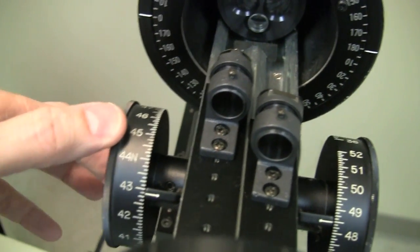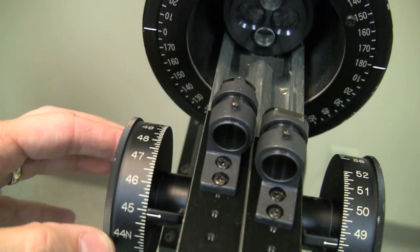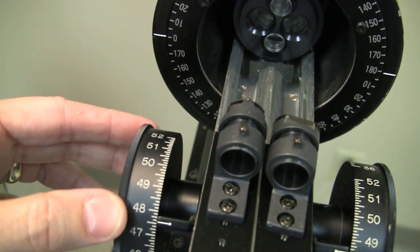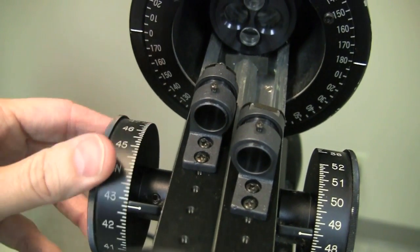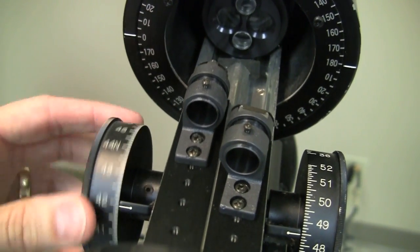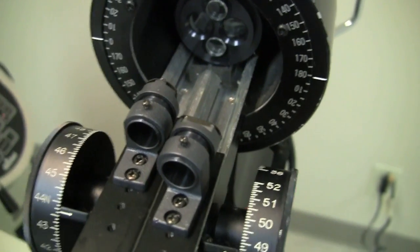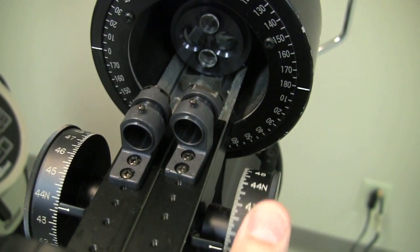Notice that the numbers go to higher and higher diopter values or shorter radius of curvature values as I move this towards me, and lower numbers as they go towards the patient. That won't make a whole lot of sense yet, but that's what happens. So if I move the vertical one, you can see this one is moving instead.